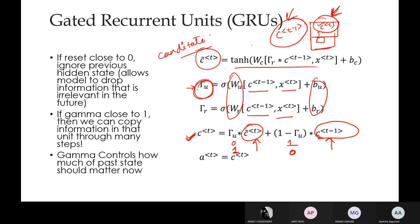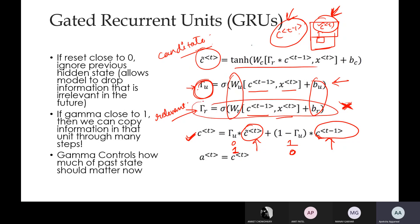Regarding the reset gate (gamma r) vs. the update gate: the reset gate is an additional equation in GRU that decides whether the input from the previous layer is important. In many versions this equation is not present — GRU works fine without it. Only four core equations are essential; the reset gate equation was added in later versions.